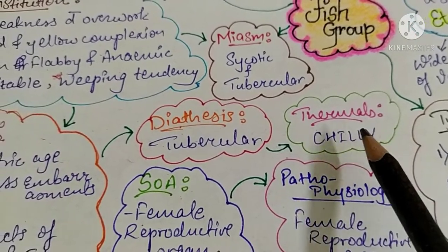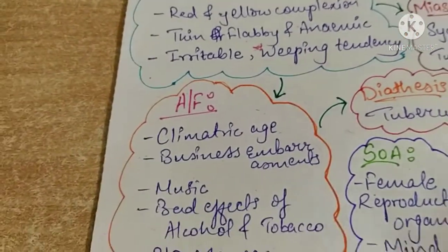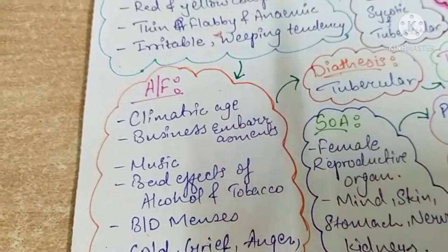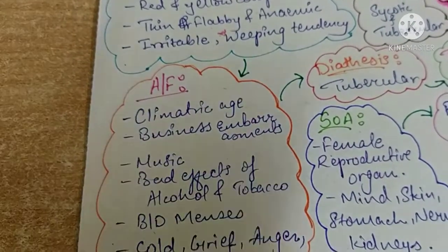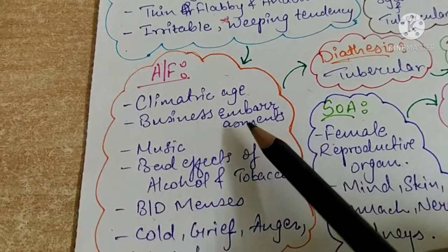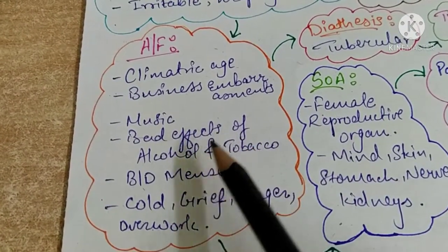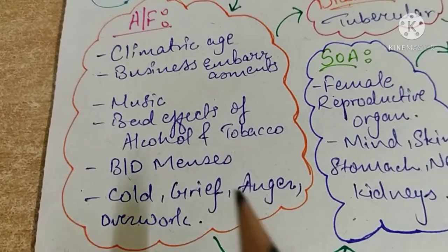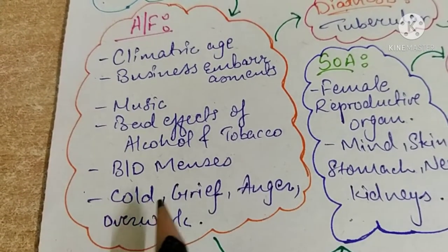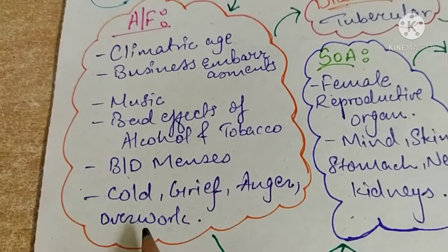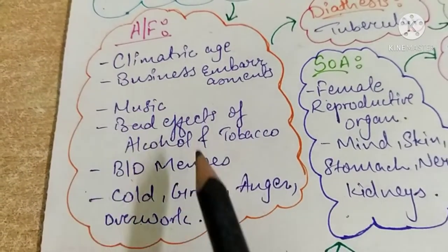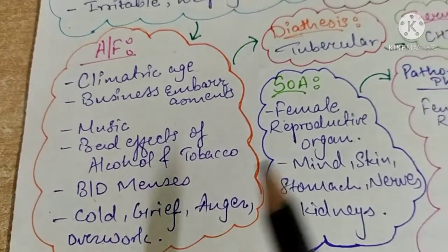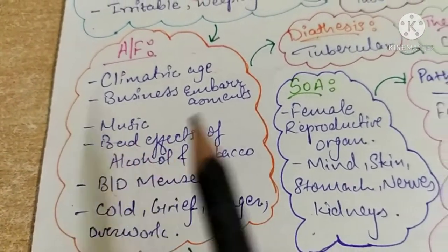Thermally, the patient is a chilly patient. The main causative factors include business embarrassments, music, bad effects of alcohol and tobacco, before and during menses, cold, grief, anger, and overwork. These are the main elements from which complaints get aggravated or start.